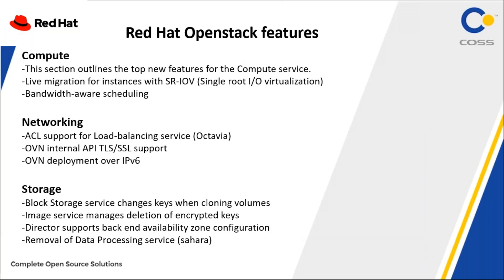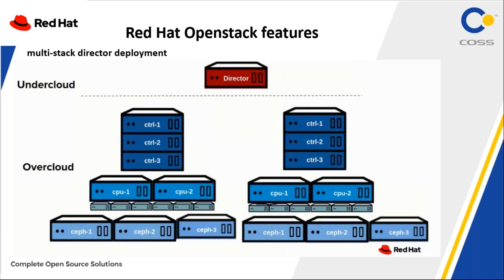Now in OpenStack we have some features. One important feature is multi-stack director deployment. We have one concept called UnderCloud and one concept called OverCloud. The UnderCloud is the main director node — a single system OpenStack installation that includes components. On Red Hat's architecture, besides the core components, we have something else. The UnderCloud is an all-in-one host that has all components for provisioning and managing the OpenStack nodes forming your OpenStack environment.